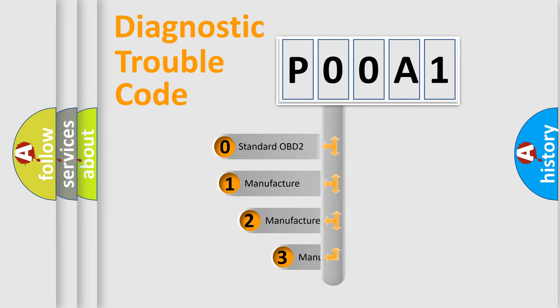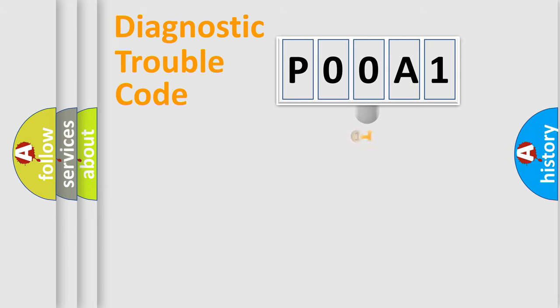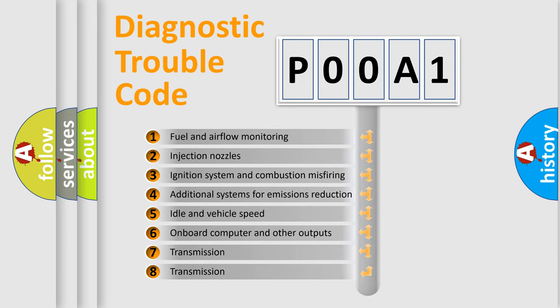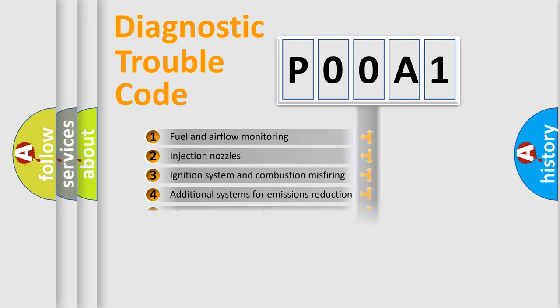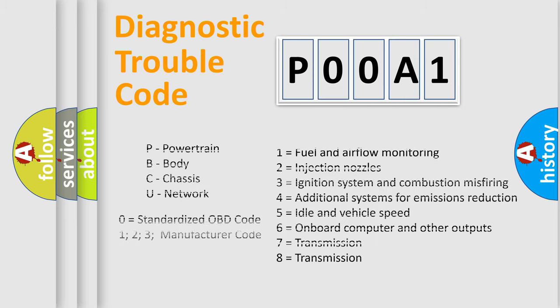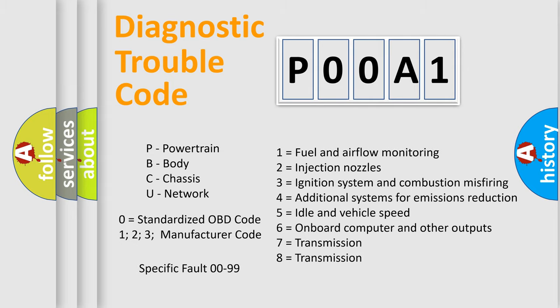If the second character is expressed as zero, it is a standardized error. In the case of numbers 1, 2, or 3, it is a more specific expression of the car-specific error. The third character specifies a subset of errors. The distribution shown is valid only for the standardized DTC code. Only the last two characters define the specific fault of the group. Let's not forget that such a division is valid only if the second character code is expressed by the number zero.